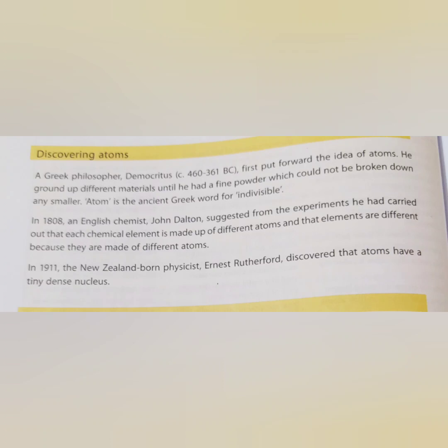Do you know how atoms were discovered? Very long ago, a Greek philosopher Democritus told us that all things around us are made of very tiny particles which are indivisible. That is why the name 'atom' came — it is a Greek word meaning indivisible.